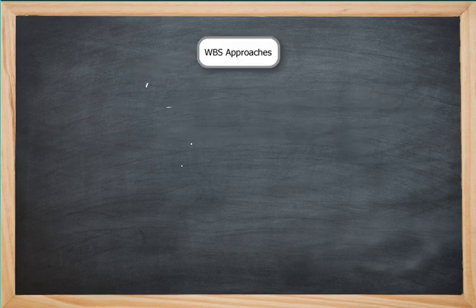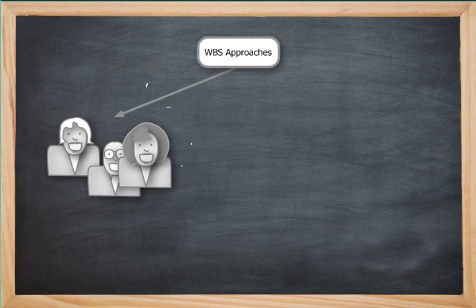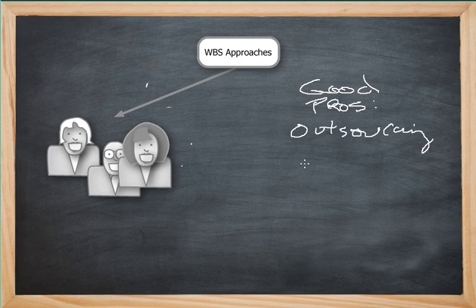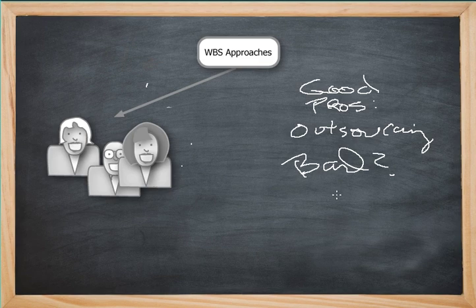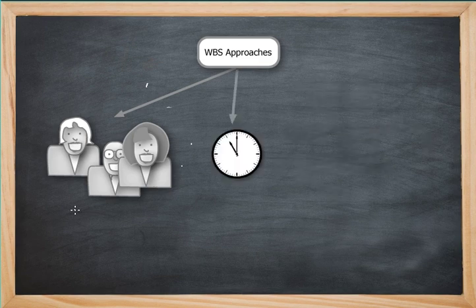There isn't a single way of approaching the creation of a WBS by levels, but here are some common ways. First is by organization — by department, such as engineering, QA, or product management. The good part is this works well for outsourcing part of your project. The bad part is you and your team may try hard to structure the work to fit how your team is organized, which may not be the best breakdown of that work.